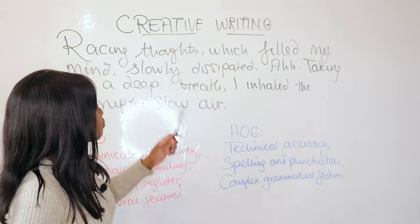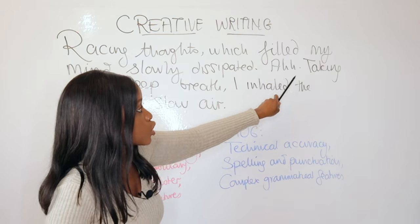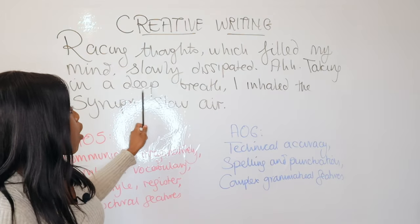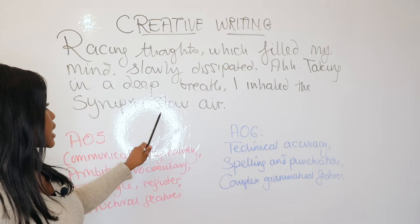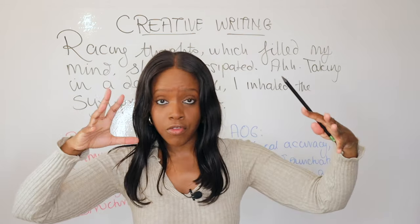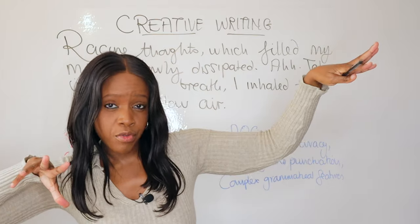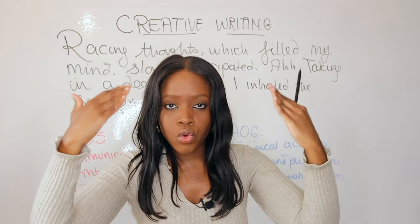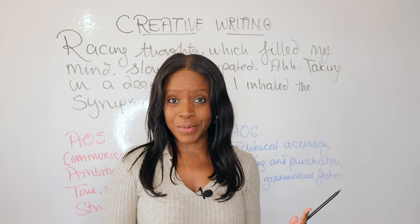I then use my one-word sentence 'Ah,' which also counts as onomatopoeia. Before that, I talk about how I've taken a deep breath and I'm taking in the syrupy slow air, using sibilance here, but also showing that the air itself — I'm using a little bit of weather and atmospheric reference. I'm showing that even the atmosphere itself is slowing down, and I'm preparing my reader for the ending part of this story.